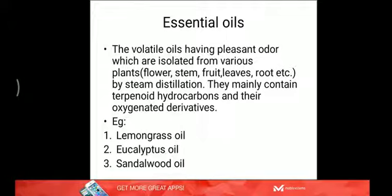Before we talk about terpenoids, let us know what is meant by essential oils. The volatile oils, very light oils having pleasant odor, which are isolated from various parts of plants like flower, stem, fruit, leaves, root, etc., and obtained by steam distillation. They mainly contain terpenoid hydrocarbons and their oxygenated derivatives. So terpenoids are the chemical constituents present in essential oils. We are very familiar with these examples in our daily life like lemongrass oil, eucalyptus oil which we use for headaches, sandalwood oil which is very much used in perfumery. So these are essential oils.